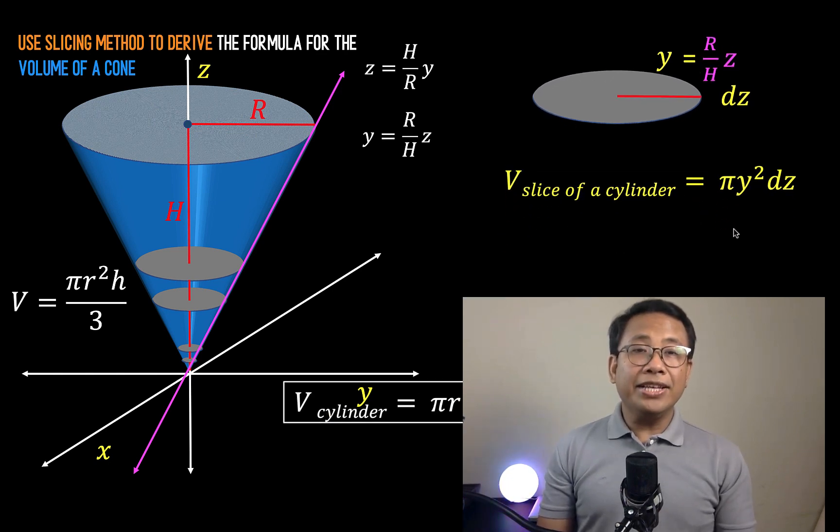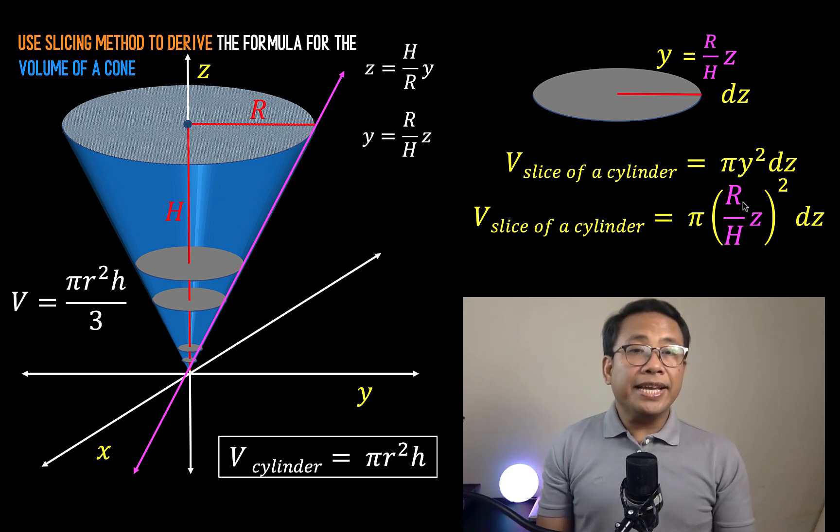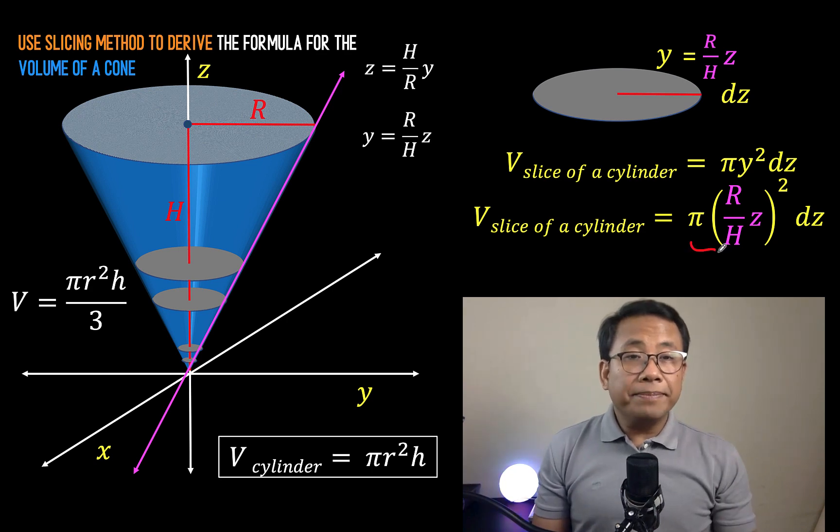So substituting now that value to y, we now have this equation. The volume of this circular disk now is pi times the radius squared times height, where the radius is r over h times z, then we square it. The height of this thin disk is the infinitesimal dz. Notice now that this part here of the equation is the area of the circular base, and this dz is the height of this disk.